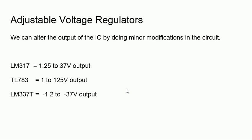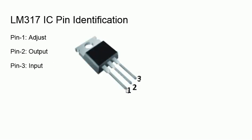And now the pin identification of LM317 from the top view. From left to right, if you see, pin 1 is the adjust, pin 2 is output, and pin 3 is the input. So center pin is the output - that you have to remember.